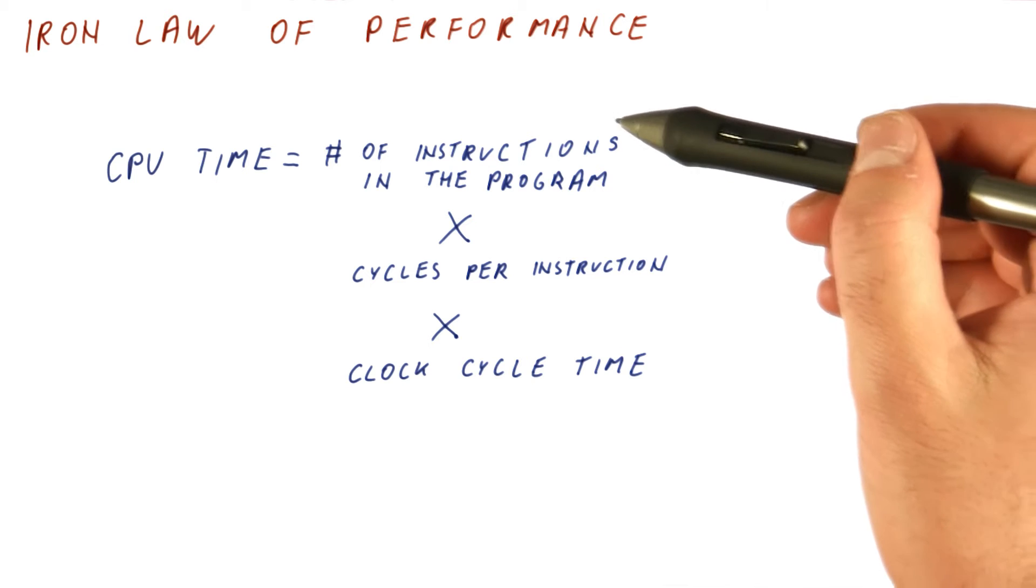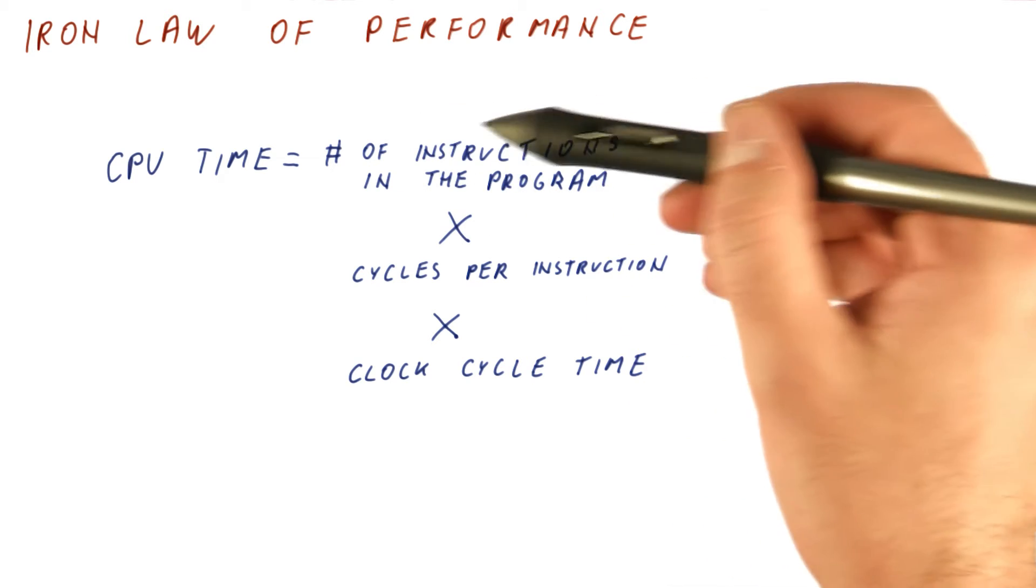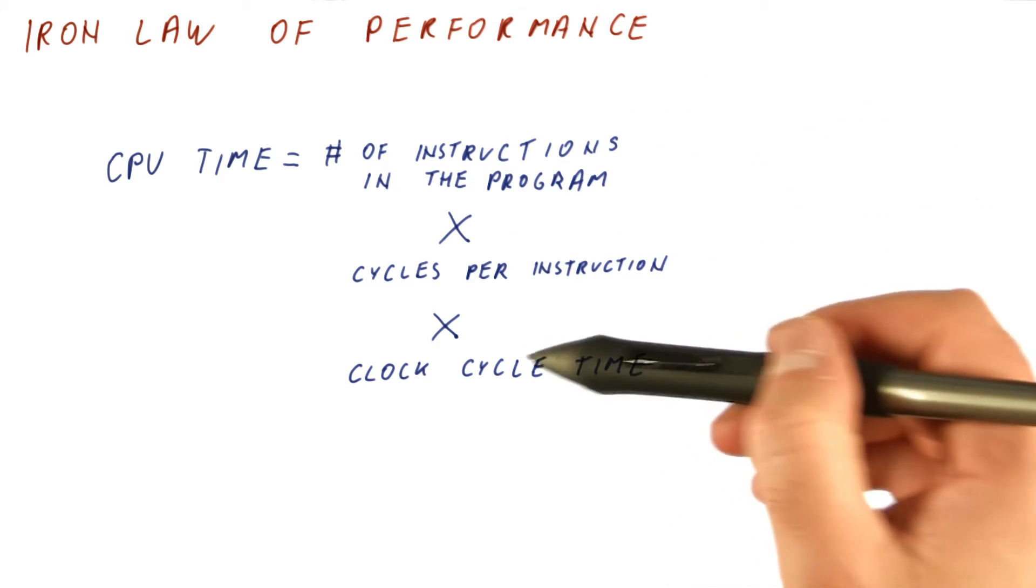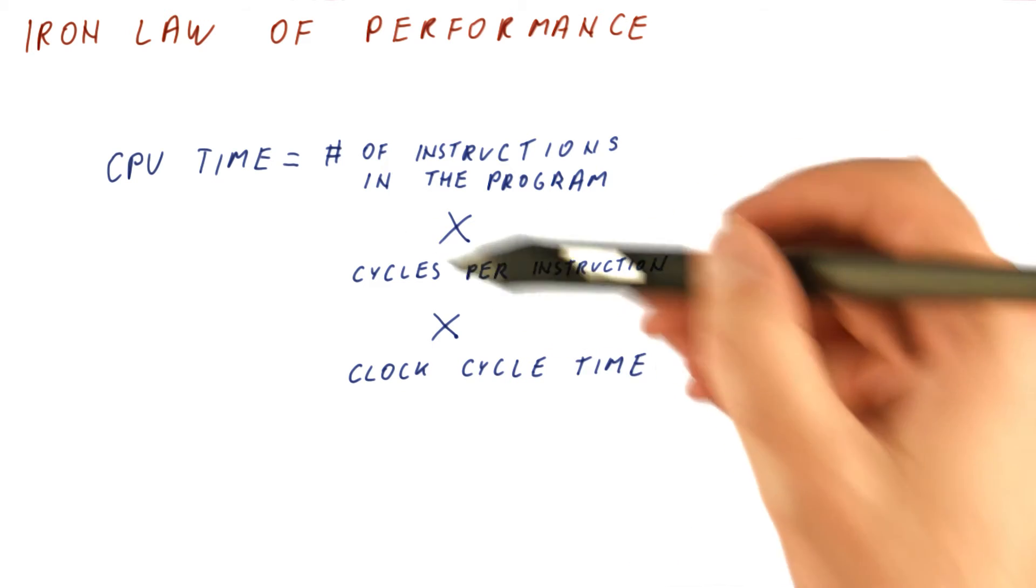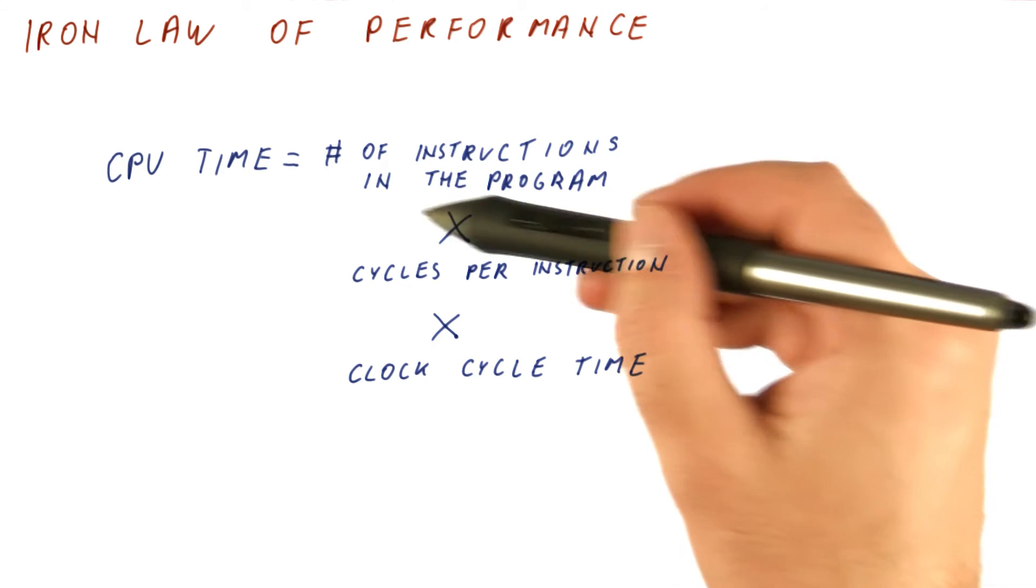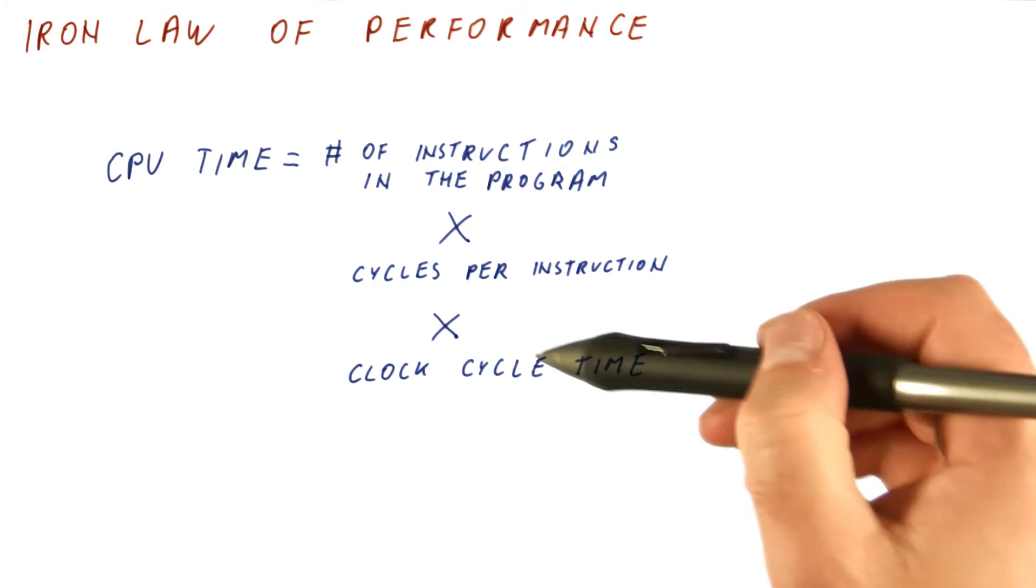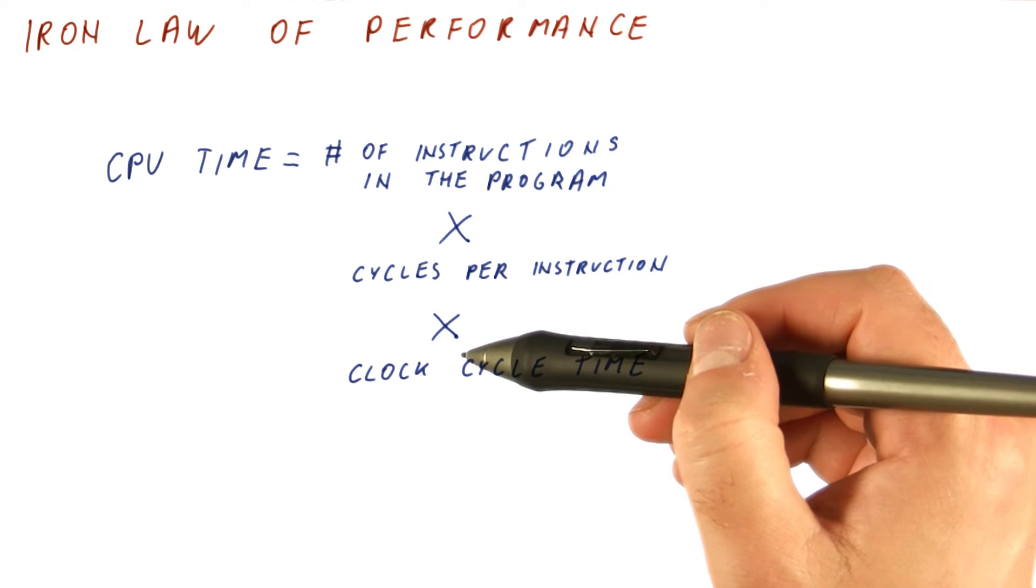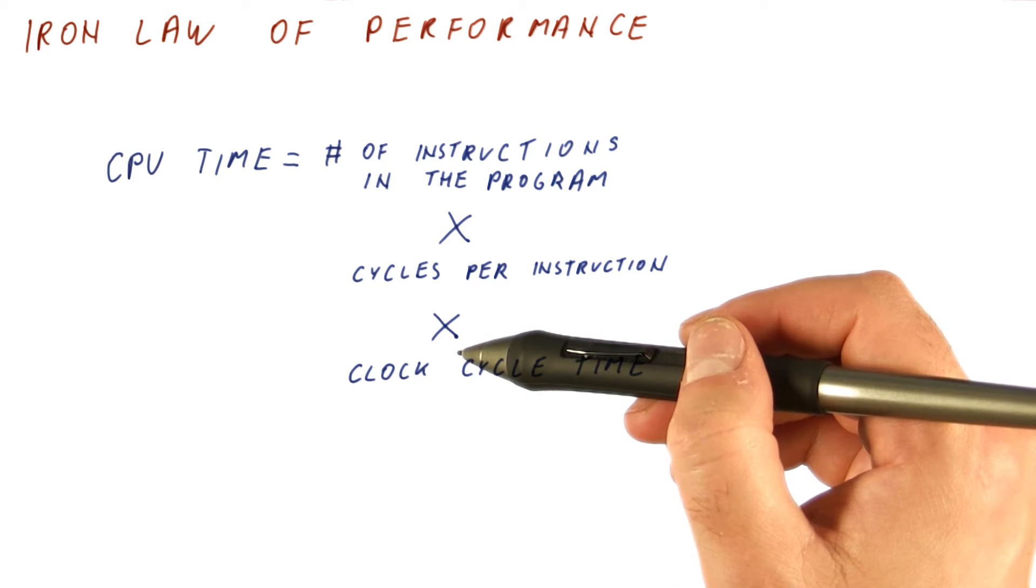So why do we want to think of processor time in terms of instructions per program, cycles per instruction, and clock cycle time, instead of just measuring the overall time? Well, because these three components allow us to think about different aspects of the computer architecture and surrounding areas that we can change.